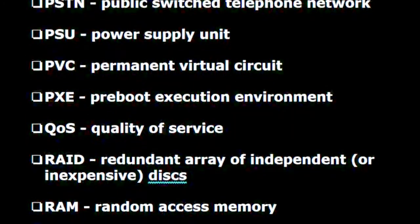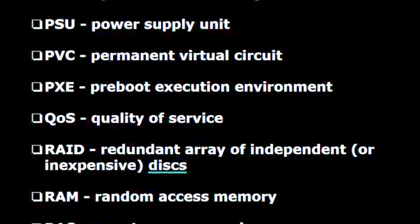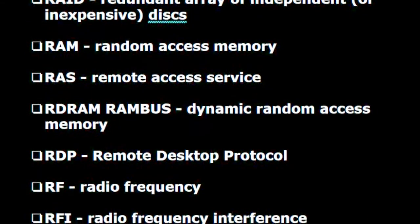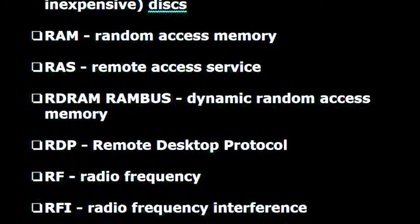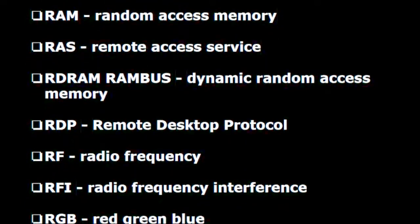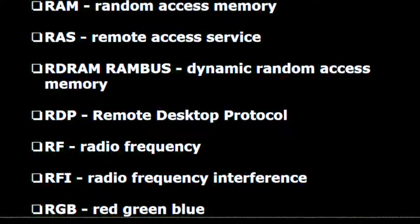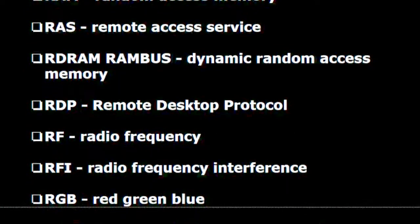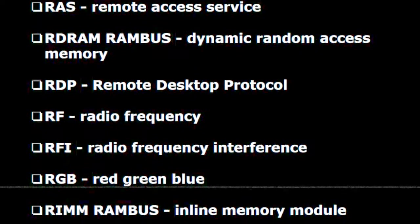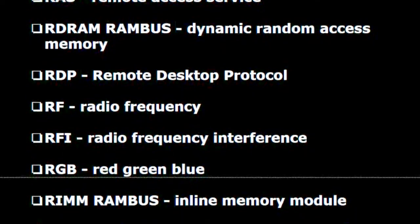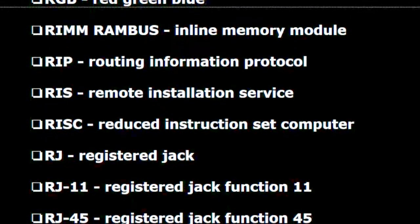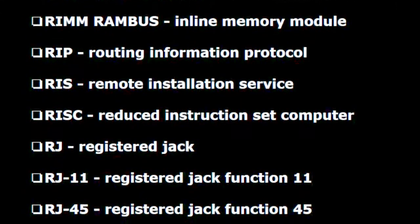R.A.I.D. — Redundant array of independent or inexpensive disks. R.A.M. — Random access memory. R.A.S. — Remote access service. RDRAM — Rambus dynamic random access memory. R.D.P. — Remote desktop protocol. R.F. — Radio frequency. R.F.I. — Radio frequency interference. R.G.B. — Red green blue. RIMM — Rambus inline memory module. R.I.P. — Routing information protocol.